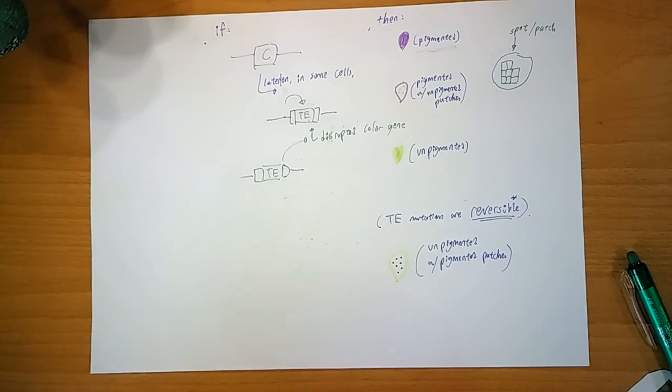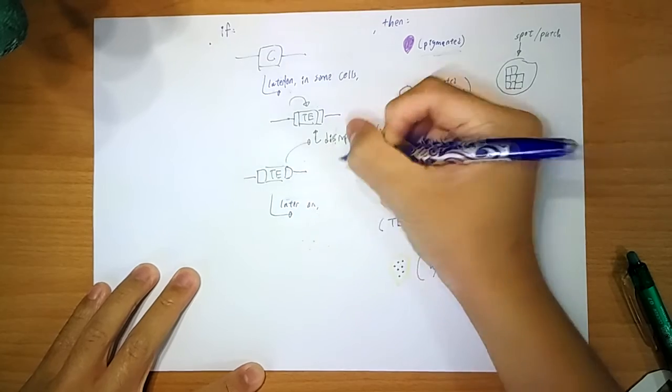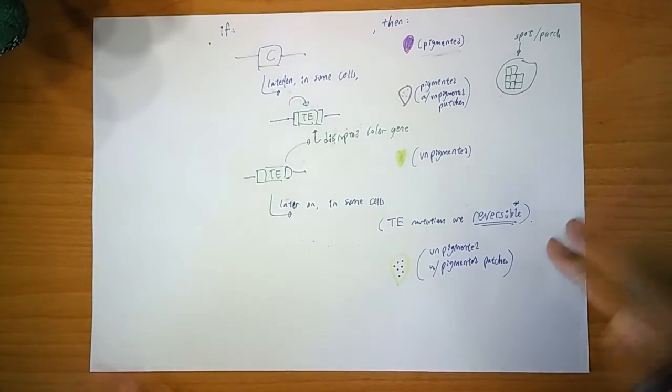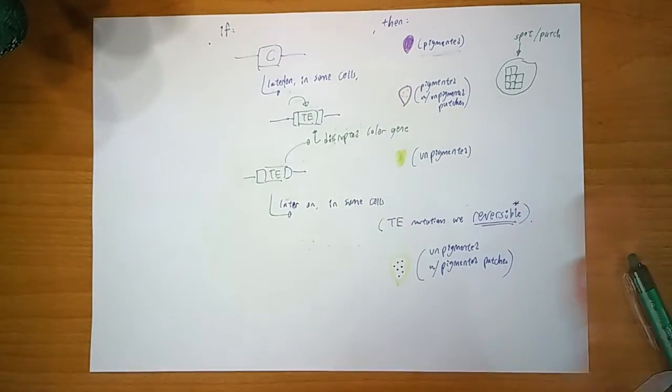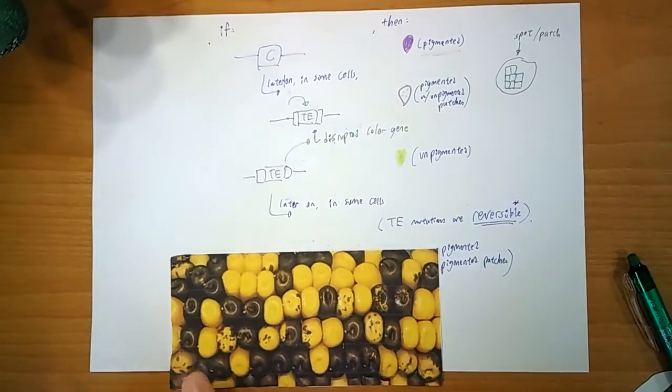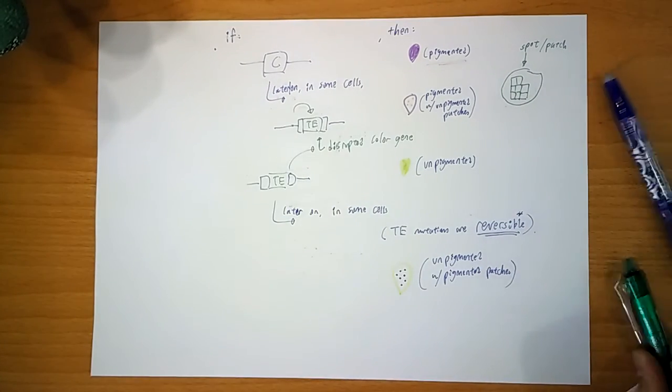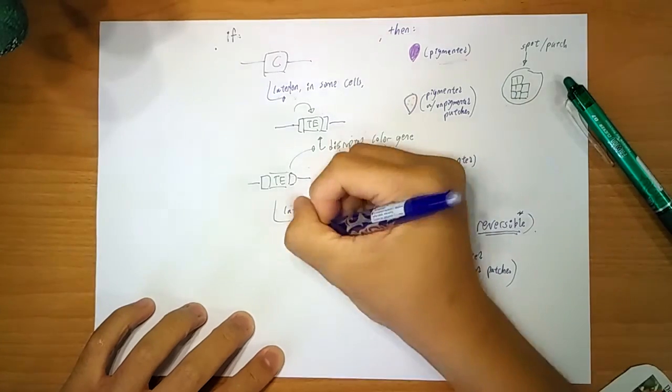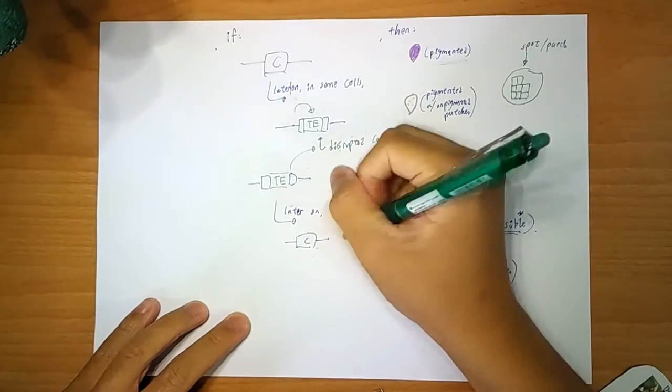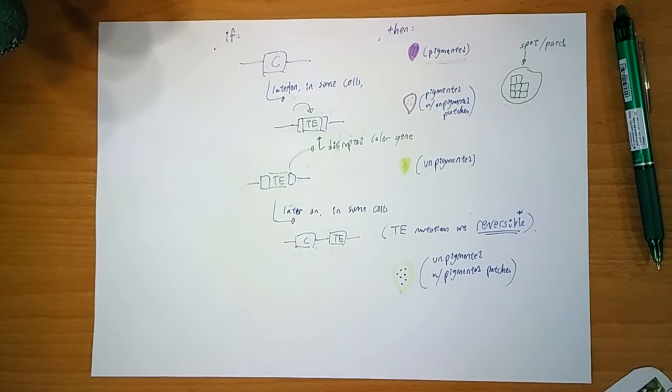But during development, this transposon can jump out also. So later on, in some cells, as usual, not the whole thing, they don't jump out all the time, all at one go. Because this jumping in and jumping out is random and independent. So just because in one cell the TE jumps out, doesn't mean all the other cells have to jump out. It's random. So if it jumps out, then you get back your color gene here. It kind of leaves something behind, but doesn't really make a difference. Because it's not that big, compared to the gene itself. And your cell can solve it by splicing.